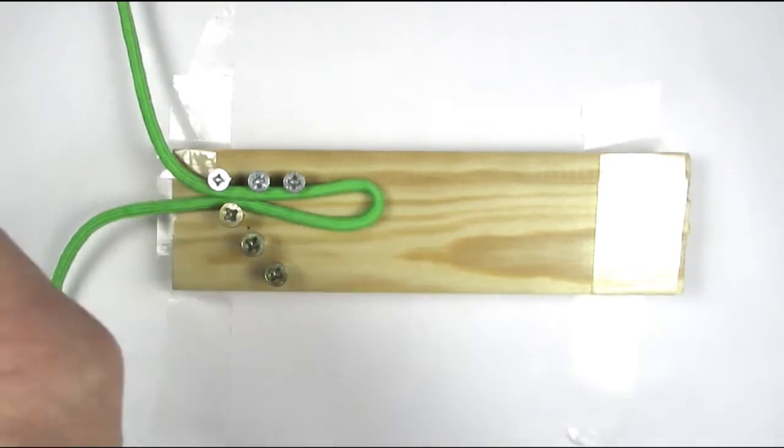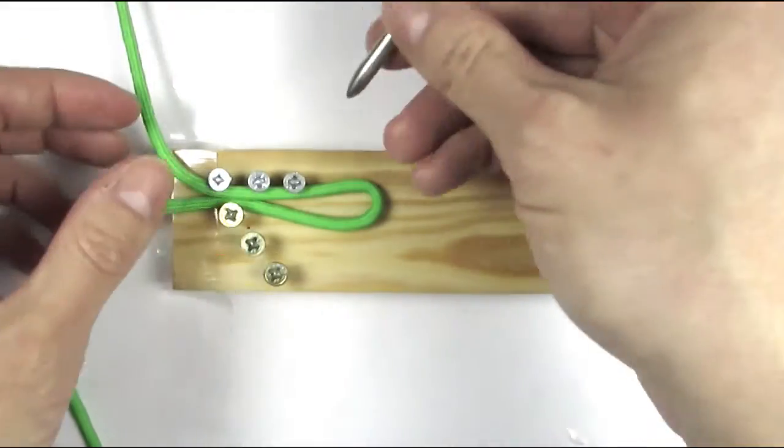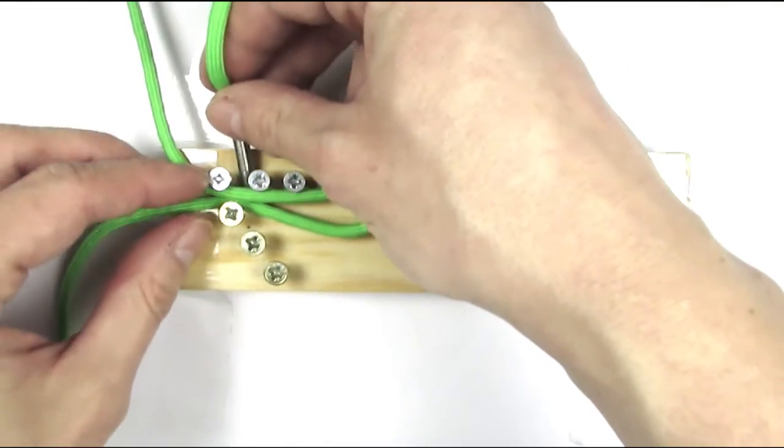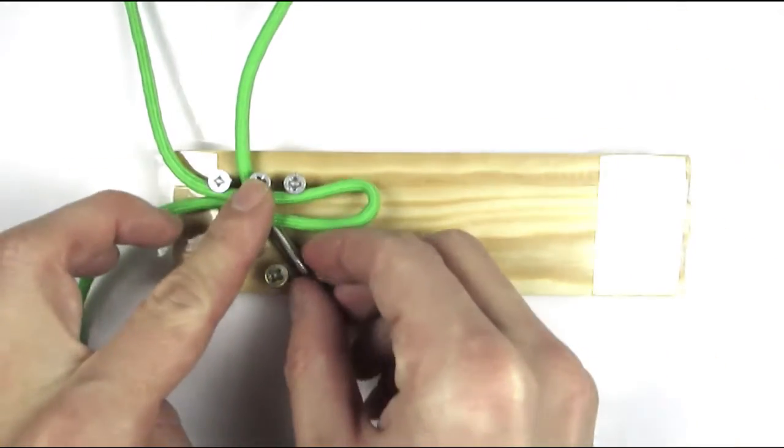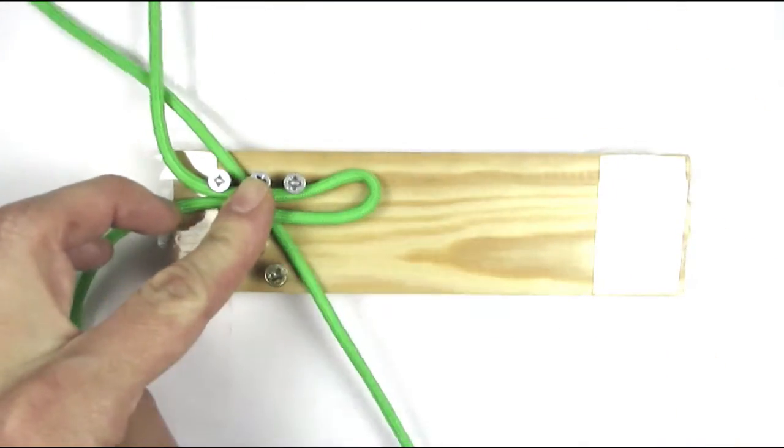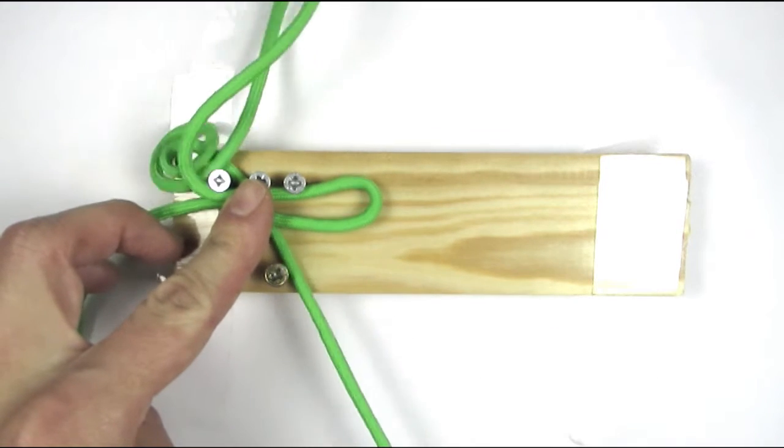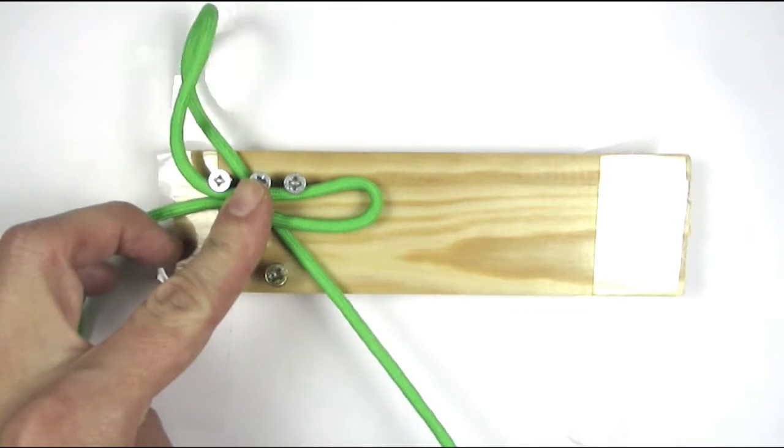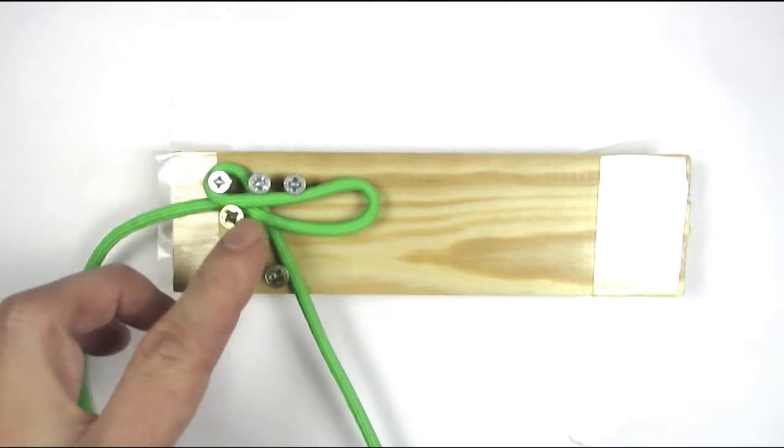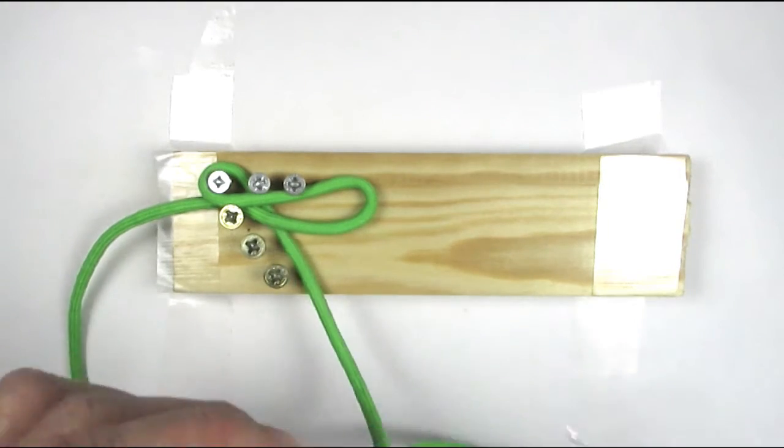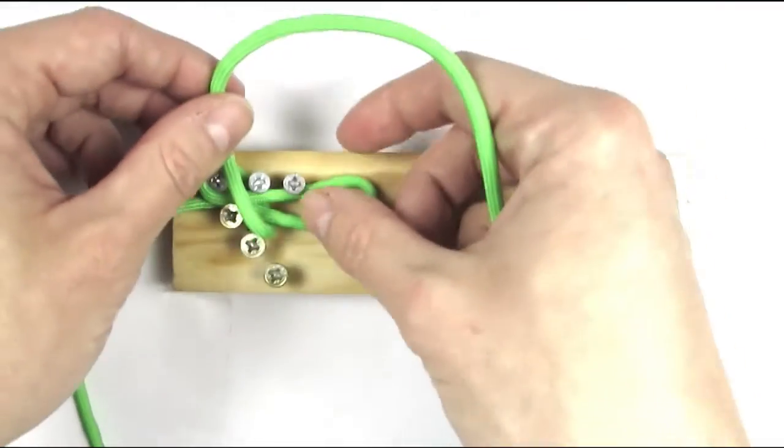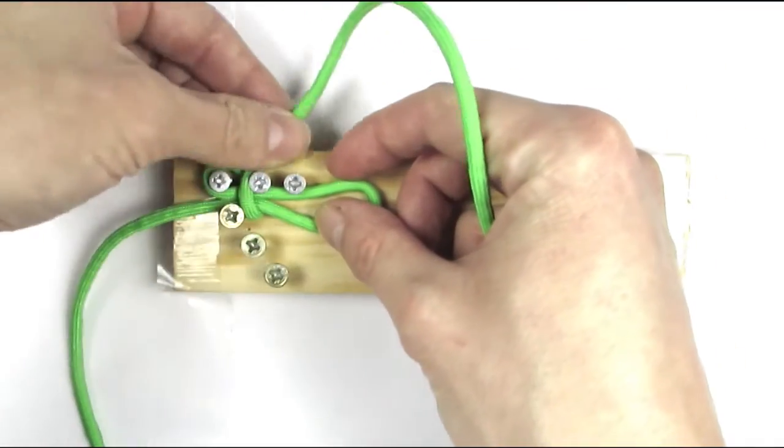With our top cord we're going to go under the bight and fold it over the same section. So fold it over like this.